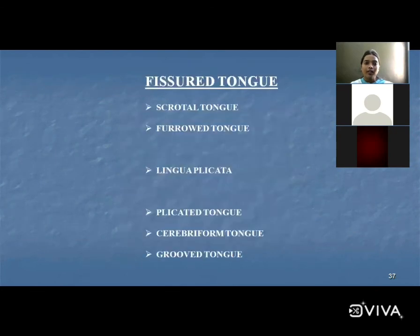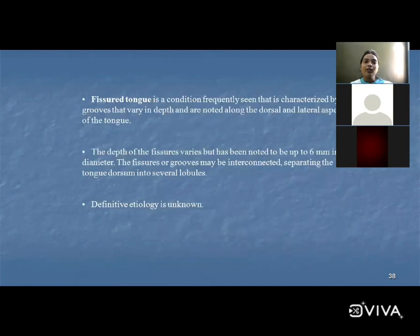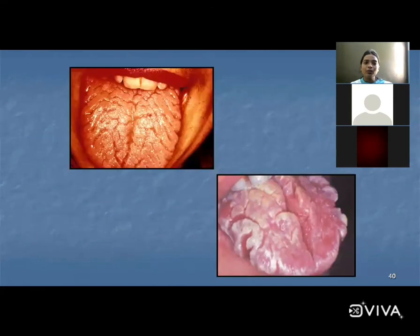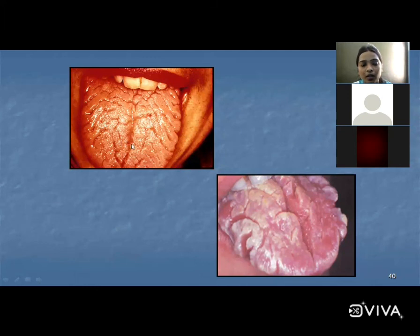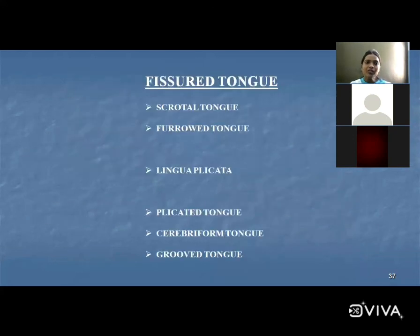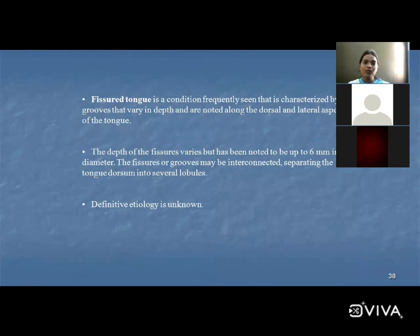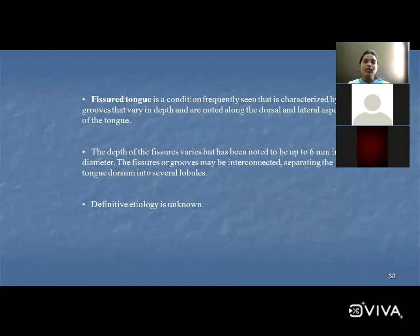Fissured tongue — also called scrotal tongue, furrowed tongue, lingua plicata, plicated tongue, cerebriform tongue, or grooved tongue — is a condition characterized by grooves that vary in depth along the dorsal and lateral aspects of the tongue. The depth of fissures varies but is noted up to 6 mm in diameter. The fissures or grooves may be interconnected or separated, and can lead to decreased cleansing and secondary infection.